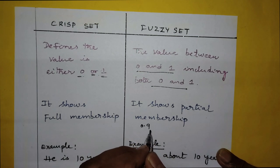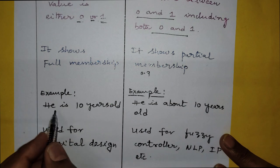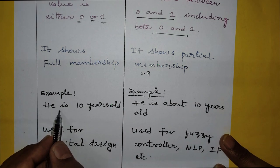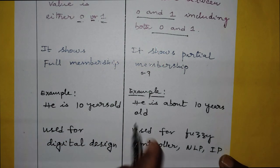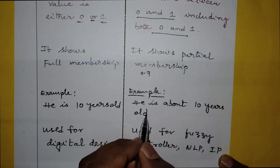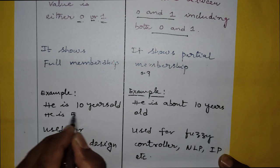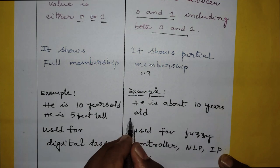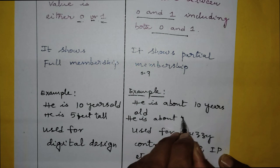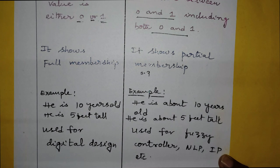An example of a crisp set: if someone says 'I am 10 years old,' that is a crisp set. But in fuzzy set, they would say 'I am about 10 years old' — that is a fuzzy set. Another example: 'He is 5 feet tall' is a crisp set, whereas 'He is about 5 feet tall' is a fuzzy set. This shows how fuzzy logic is used in our speech.